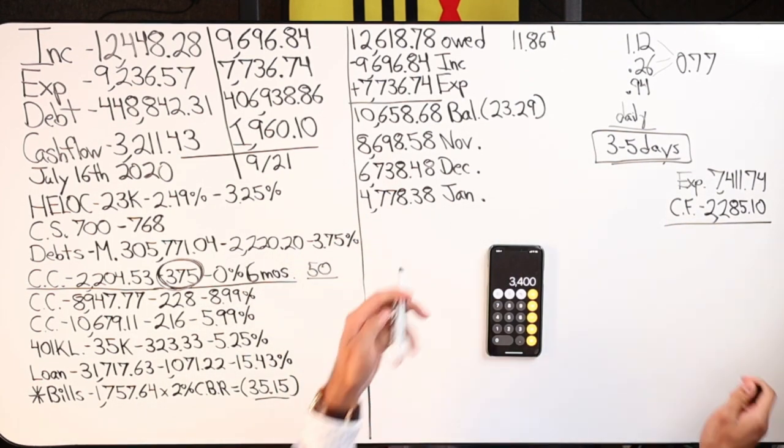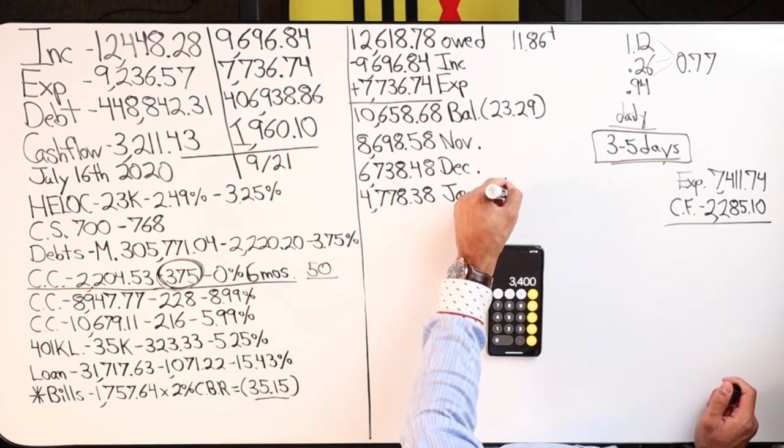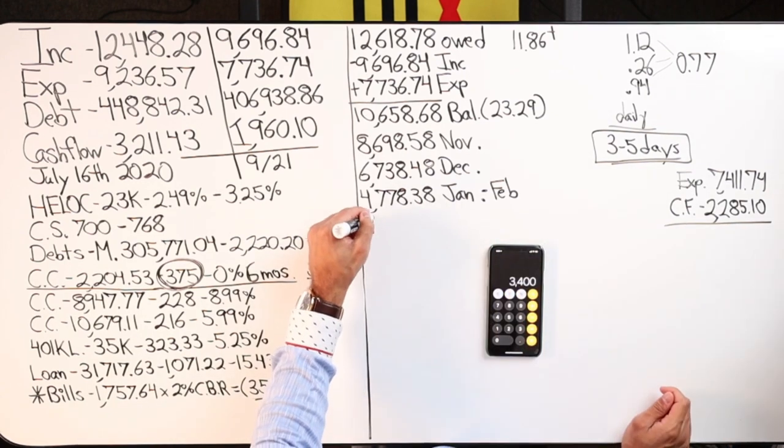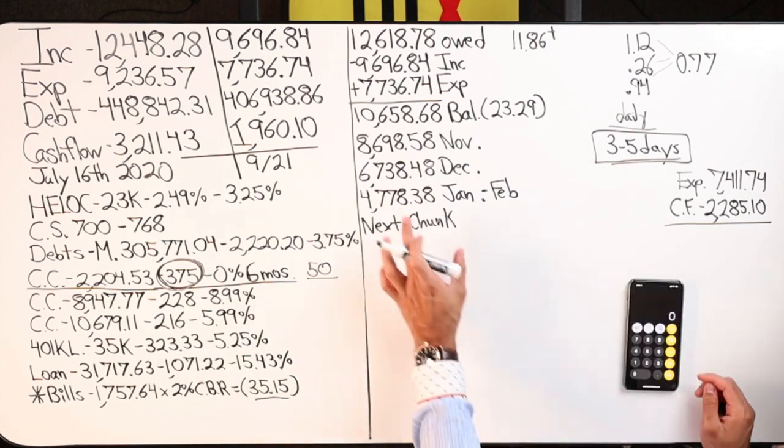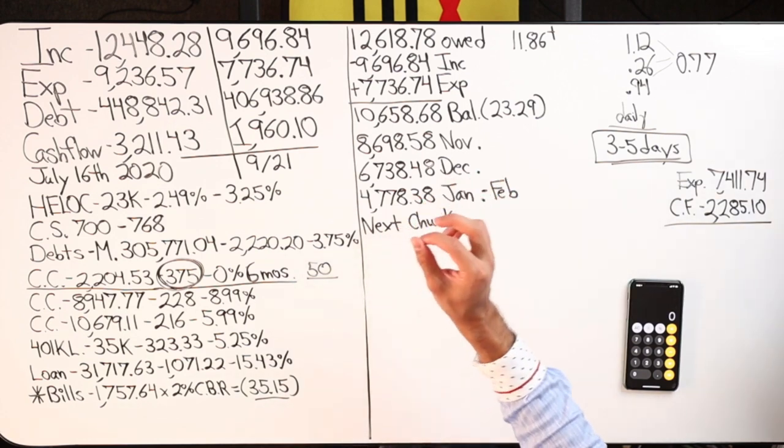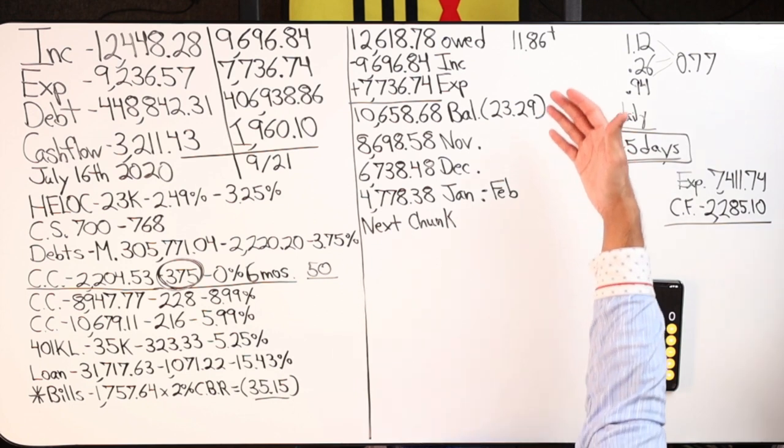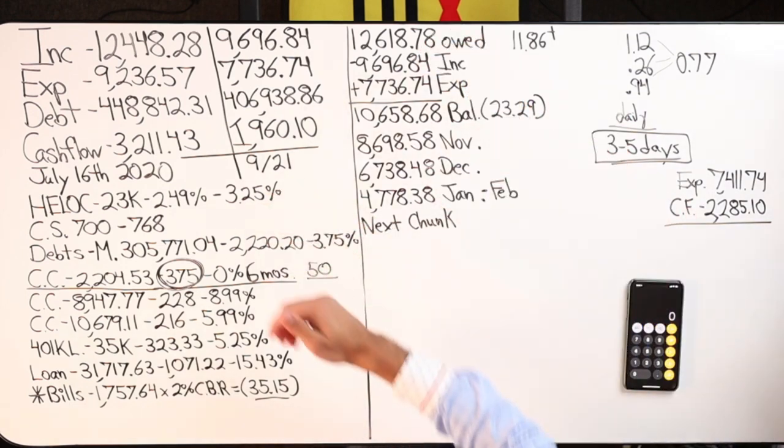So I'm betting that anywhere between January and February of 2022 is when I make my next chunk. Next chunk, the balance should be paid off, zeroed out. If it's not zeroed out, it's very close to zero. Here is a situation where we don't necessarily have to wait for the HELOC to hit zero before making our next chunk payment.